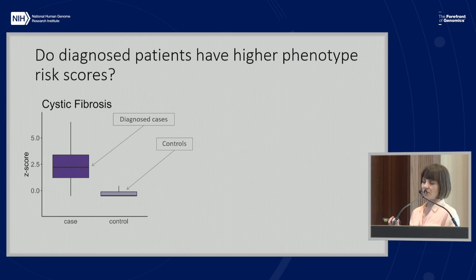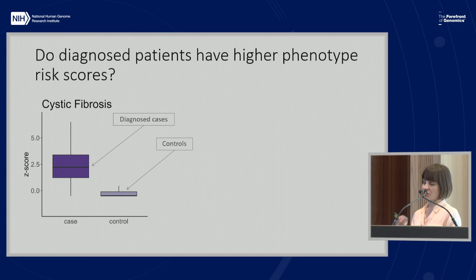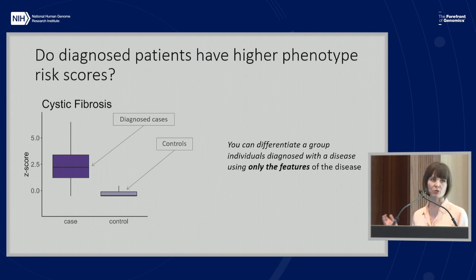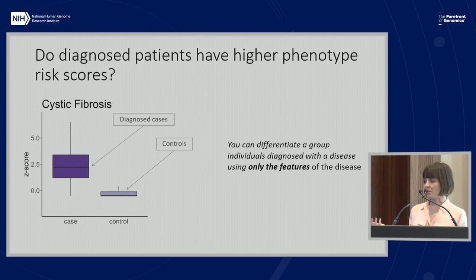The first thing we did with the phenotype risk score was try to answer a very basic question: could it distinguish between individuals who are clinically diagnosed with cystic fibrosis versus those who are not? And the answer is yes. If you take a group of patients diagnosed with cystic fibrosis, their phenotype risk score is about two and a half standard deviations away from what you would expect in a normal healthy population. This demonstrates that you can differentiate a group of individuals with a diagnosis for a disease using only the features of that disease.